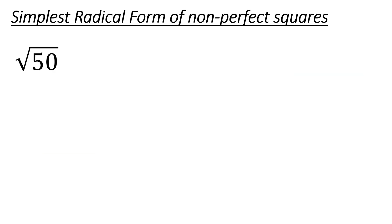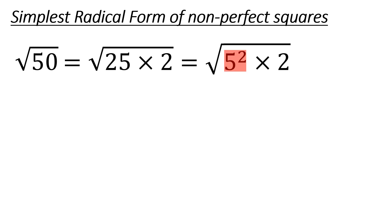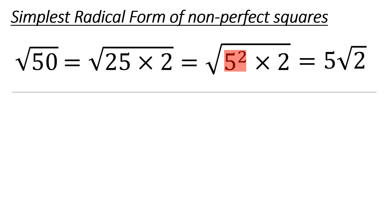Now here's the new stuff: simplest radical form of non-perfect squares. You could do the square root of 50 and get that 7-point-whatever, but you can also break it down and find perfect squares that are factors of 50. Think of 50 as 25 times 2. 25 is a perfect square — you can think of that as 5 to the second. So the square root of 5 squared means the 5 can come out on the outside, and you get 5 times the square root of 2.